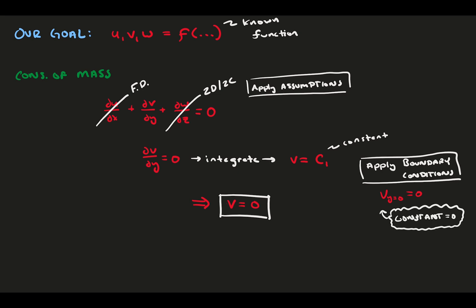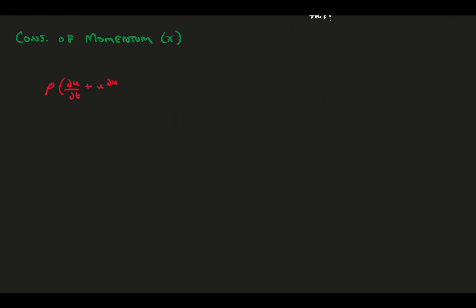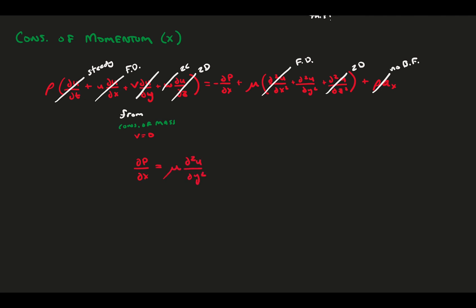We can apply this known to the conservation of momentum equations with our assumptions. Next, bring up the conservation of momentum equation in the x-direction. We can remove a bunch of terms because it is steady, fully developed, two-dimensional, two-component, and there's no body force. In addition, we know v is zero from the conservation of mass. This simplifies to the following two-term equation. The pressure force is balanced by the viscous force. Notice there is absolutely no fluid acceleration left which was on the left-hand side of the original equation.